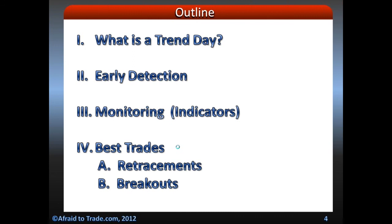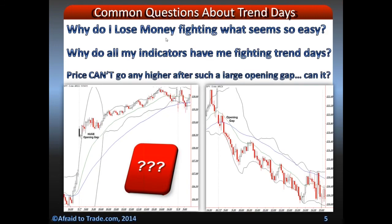Common questions traders have about trend days: why do I lose money trying to call that top or bottom? Why do I lose money fighting something that, in hindsight, seems so easy? That can be the most frustrating thing — seeing something happen and fighting it, then asking why didn't I just do that? Why didn't I buy Apple at that spot? And why do indicators, especially complex ones, have you fighting a trend day through divergences or reversal candles or going outside the Bollinger Band — all things that tell you to fade a market movement? New traders follow those indicators and it tends to hurt them on trend days.